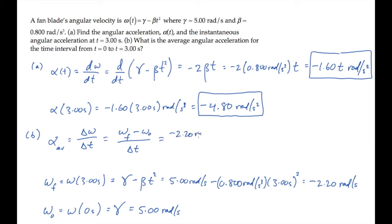Substitute those values into the expression above and calculate to find the average angular acceleration is negative 2.40 radians per second squared.